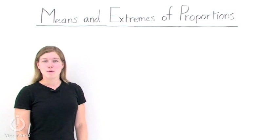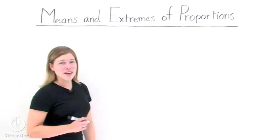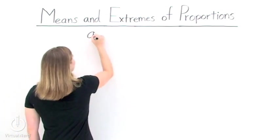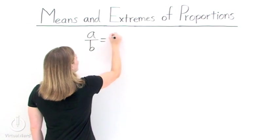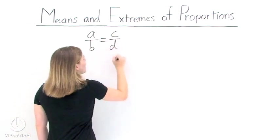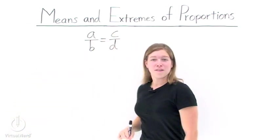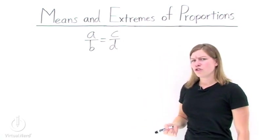How do we find the means and extremes of proportions? Well, to do this, we need a proportion. So let's take a over b equal to c over d. Now we have a proportion. But how do we find the means and extremes of this proportion?